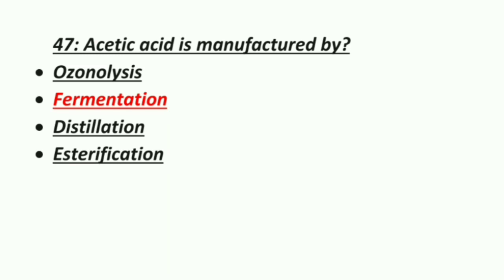Forty-seventh MCQ: acetic acid is manufactured by — Option 1: Ozonolysis, Option 2: Fermentation, Option 3: Distillation, Option 4: Esterification. The correct answer is fermentation — acetic acid is manufactured by fermentation.